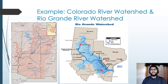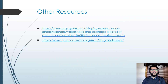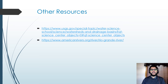So it's important to understand that a watershed has many different characteristics, and there are different examples of how that can work out. Here are some other resources if you'd like to look at those, and hopefully this was helpful. Thank you very much.